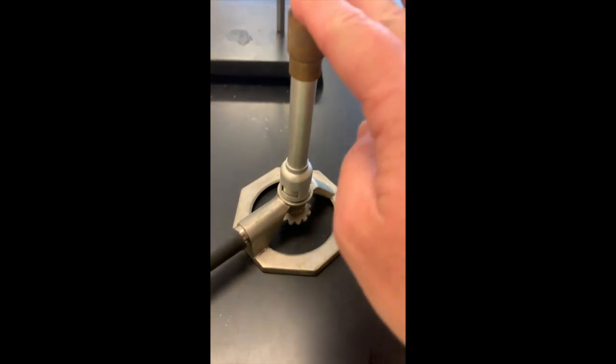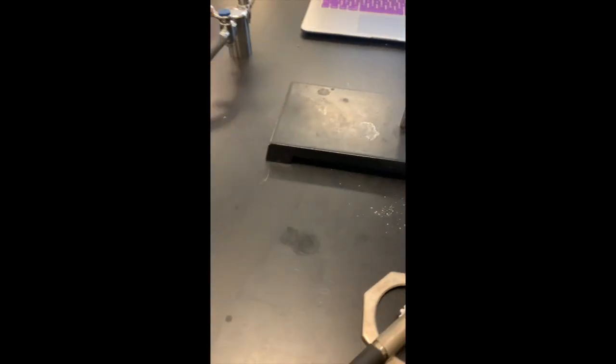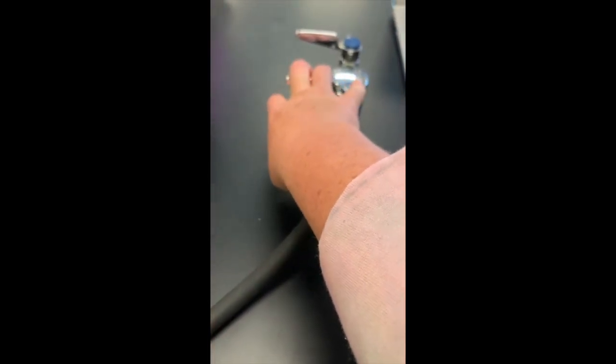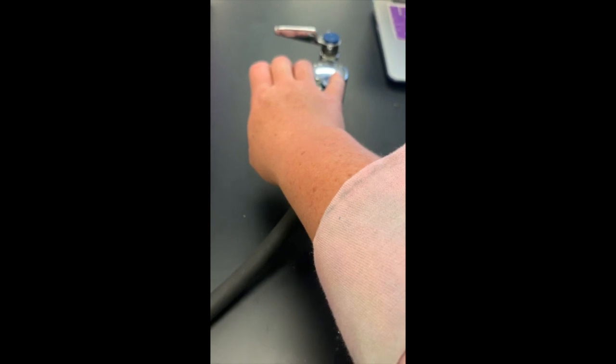This will allow the gas to flow out through the top of the nozzle once we turn the gas on. This is not the main valve for the gas. If the gas doesn't come out, that's because the main valve is not on.